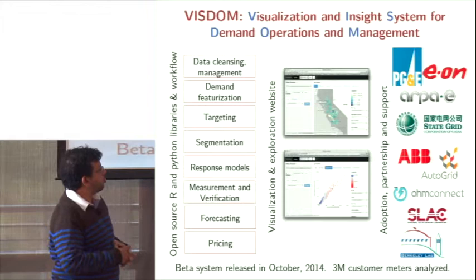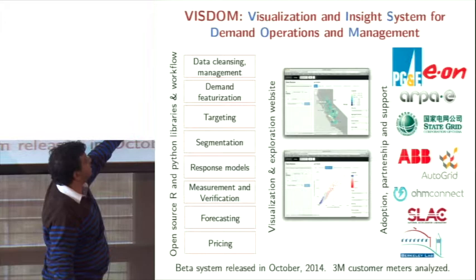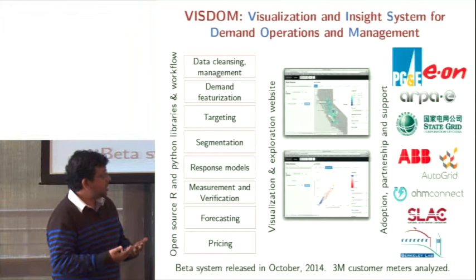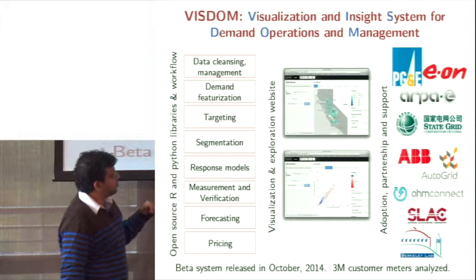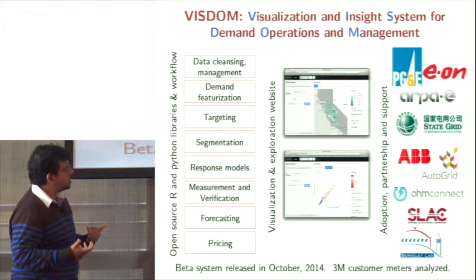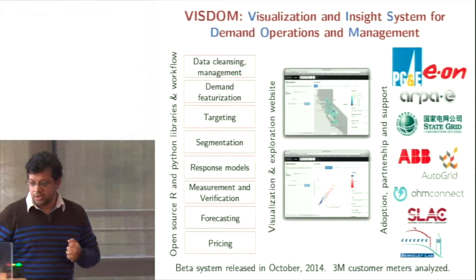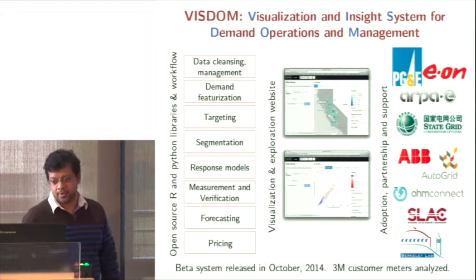Together with these open-source libraries — which we are planning to open to the entire community around October at the end of our ARPA-E project — we also built a website where you can visualize all your customers at the level of a state or zip code, understand the dynamics of different features, and understand how your programs are performing. Some of these methods have been incorporated into software used by OhmConnect, AutoGrid, and more recently Opower, as well as partners like StateGrid, PG&E, and EON.